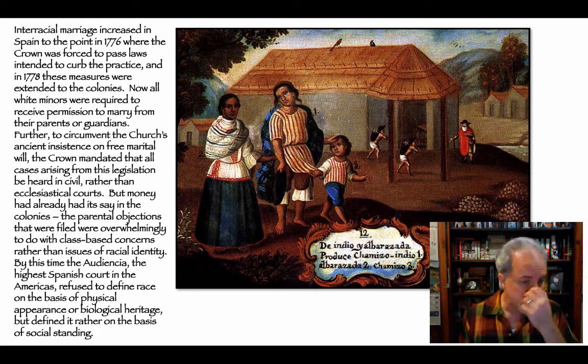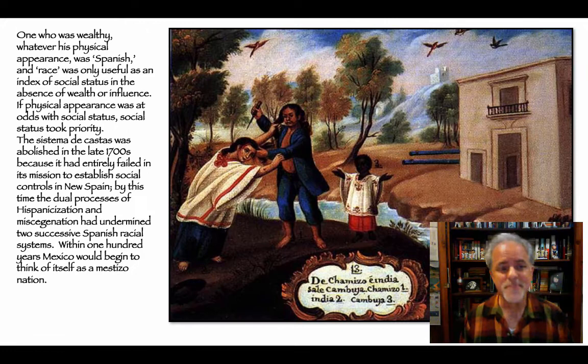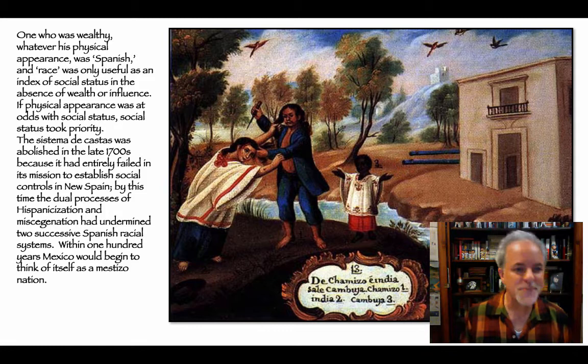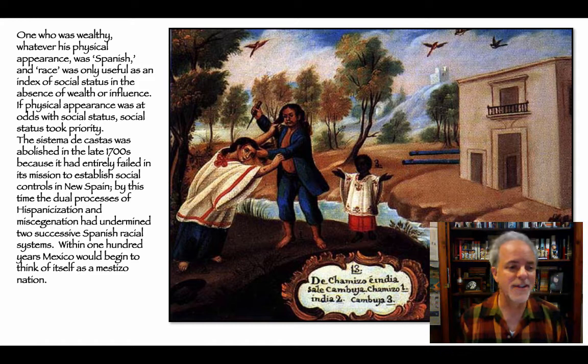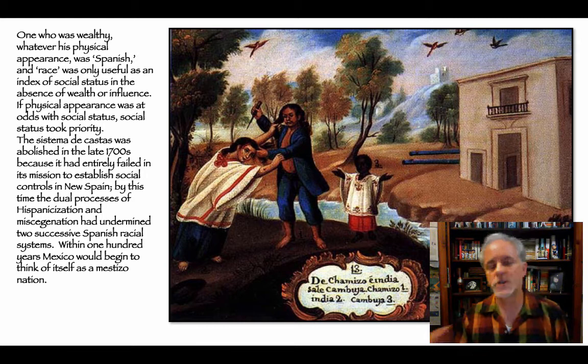Over time, it was wealth and not race that became the primary determinant of social position. Interracial marriage increased in Spain to the point that in 1776 the crown was forced to pass laws to curb the practice, extended to the colonies in 1778. All white minors were required to receive permission from parents or guardians to marry. But money had already had its say in the colonies — parental objections filed were overwhelmingly about class rather than racial identity. By this time, the Audiencia refused to define race on the basis of physical appearance but rather on the basis of social standing — wealth. The sistema de castas was abolished in the late 1700s because it had failed entirely to establish social controls.